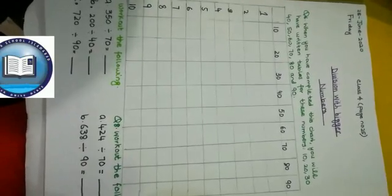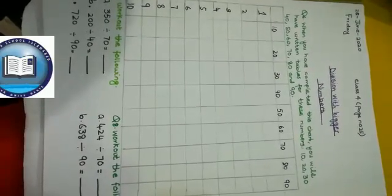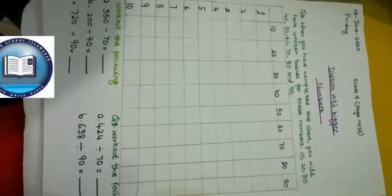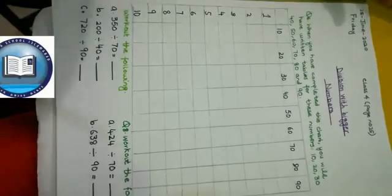You will have written tables for these numbers: 10, 20, 30, 90. You will have all tables. How to do this is the same method.